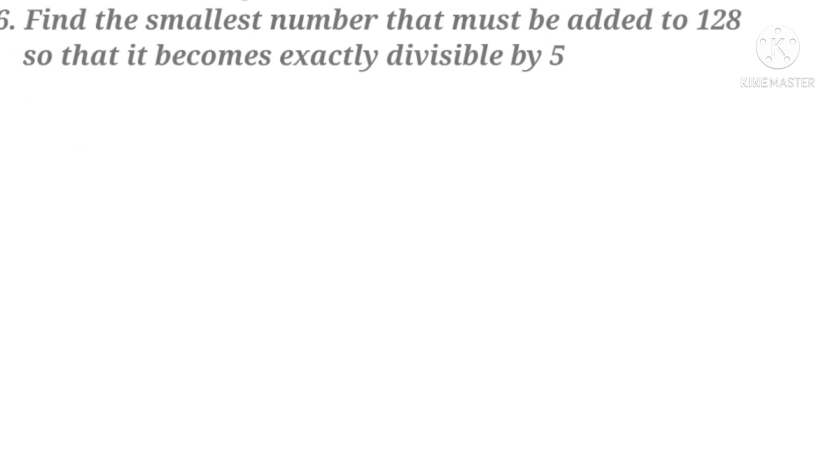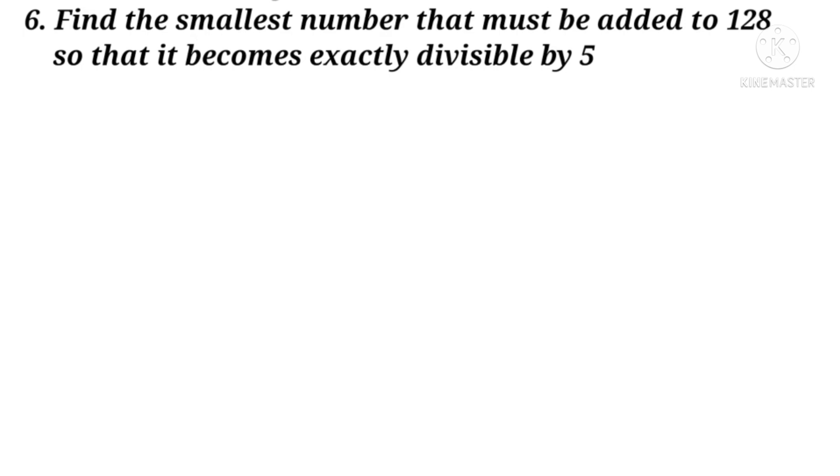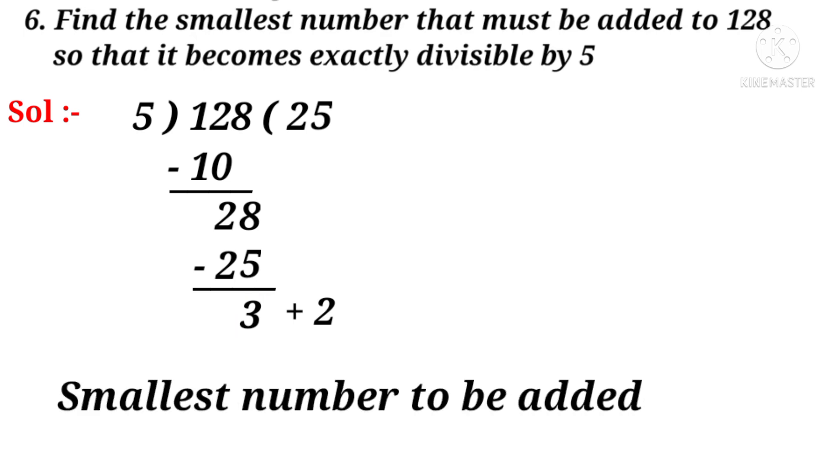Now 6th problem. Find the smallest number that must be added to 128 so that it becomes exactly divisible by 5. Solution: Observe the word divisible. It means we have to do division. So let us divide 128 by 5. 5 twos are 10. By subtraction, we get the remainder 2. Let us take 8. 5 fives are 25. So by subtraction, we get the remainder 3 which is not divisible by 5. So we have to add 2 to the remainder then only it is divisible by 5. So the smallest number that must be added to 128 is equal to 2.